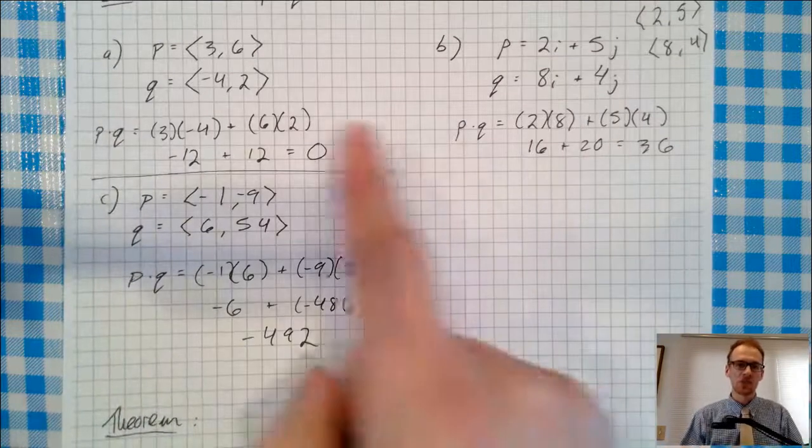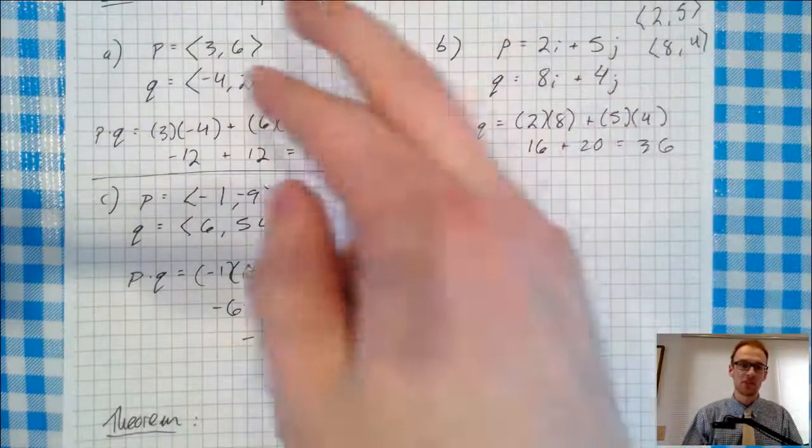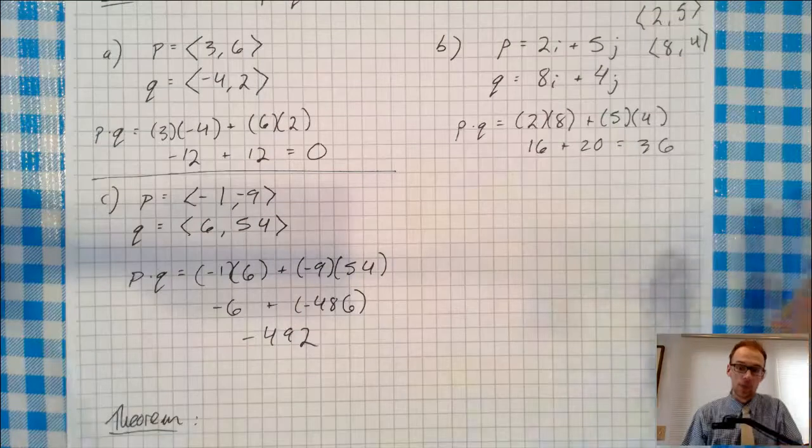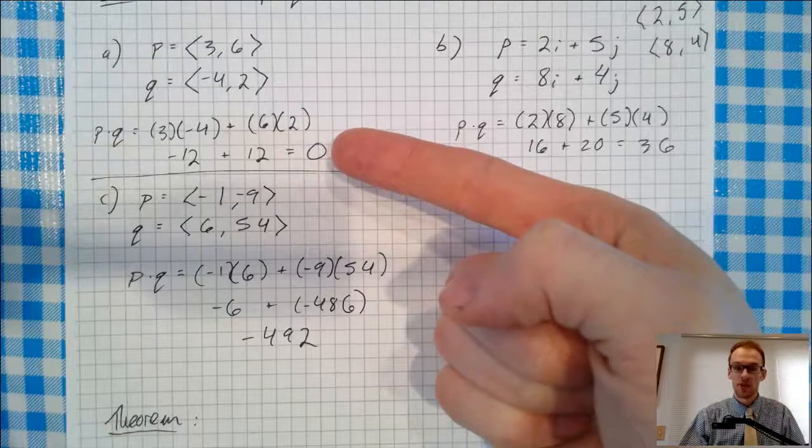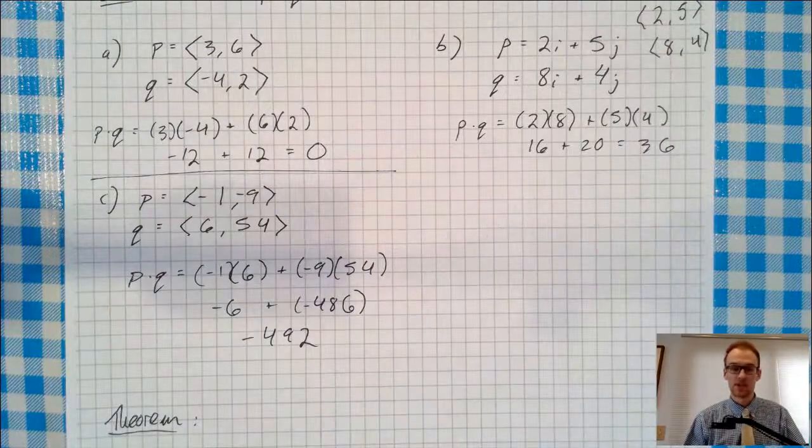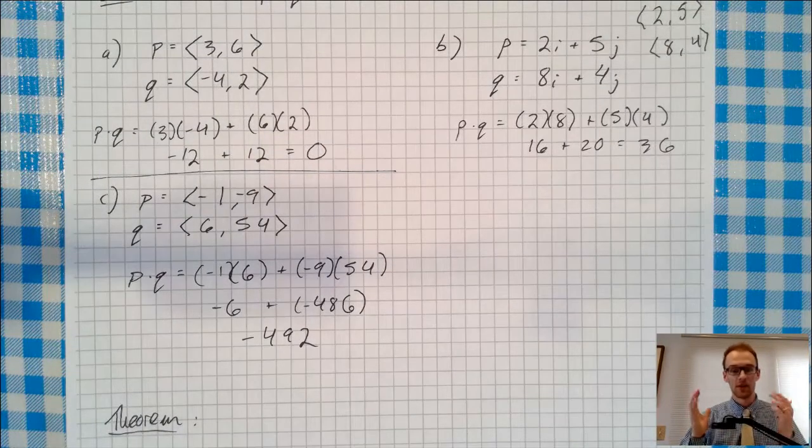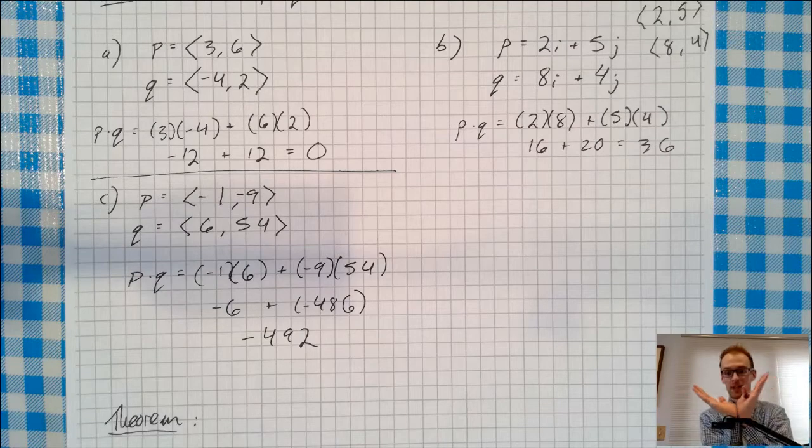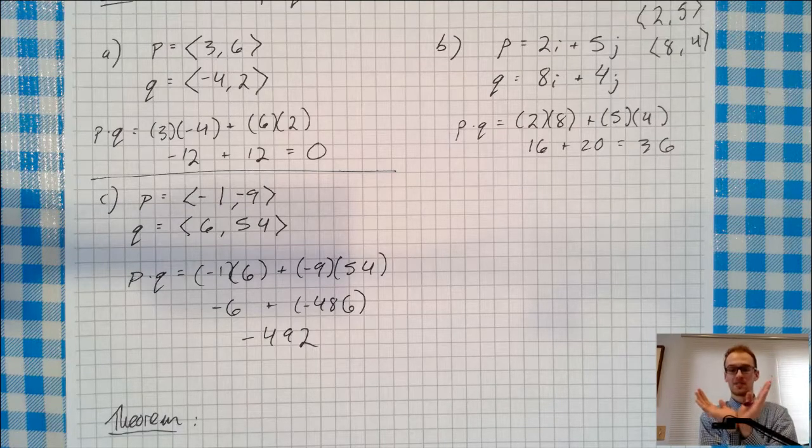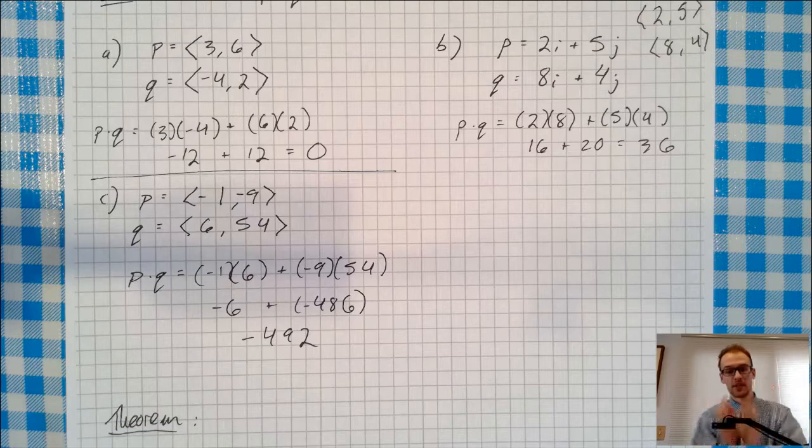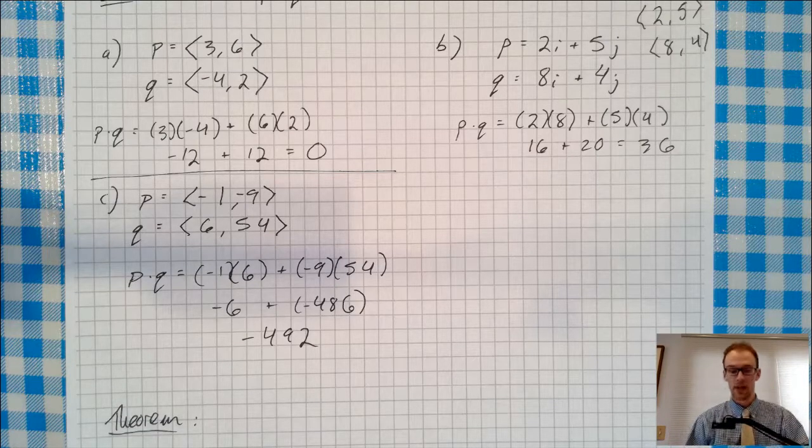Okay, can you guess which one of these pairs of vectors, P and Q, are perpendicular? If you guessed part A, where the dot product was 0, you're correct. Okay, it turns out that if you want to find out whether two vectors are exactly perpendicular, 90 degrees, all you have to do is find the dot product and see if it's 0. Because if it is 0, they're perpendicular. And if it's not 0, then it's not perpendicular.